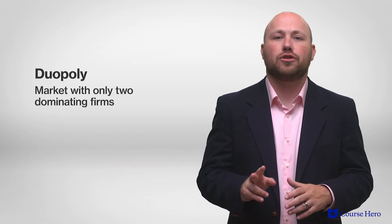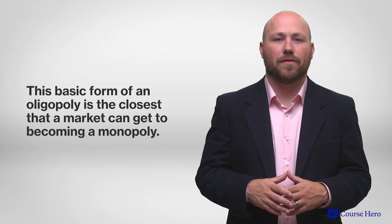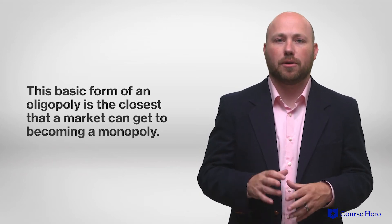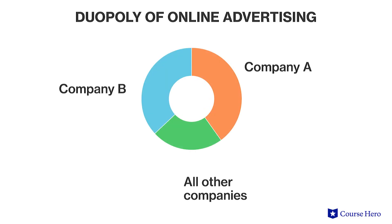The easiest version of an oligopoly to analyze is a market with only two firms, known as a duopoly. This basic form of an oligopoly is the closest that a market can get to becoming a monopoly. Competition is less than perfect because there is no easy entry for competitors into the marketplace, and consumers have very limited choice. To the extent that the two firms in a duopoly succeed in differentiating their products, they can exercise virtual monopoly power over their segment of the market.